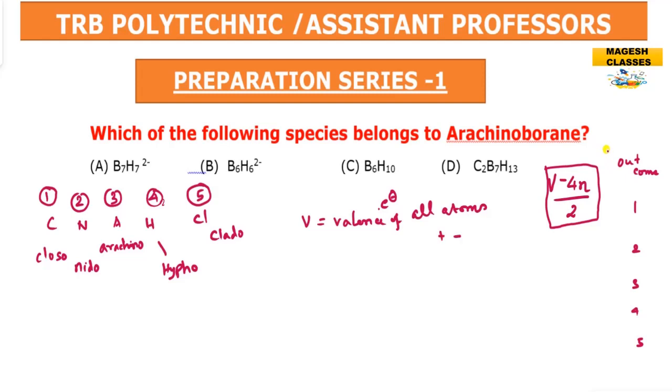If there is a negative charge, we add electrons. So V equals valence electrons of all atoms plus any negative charge. n is the number of vertices, which is the total number of boron or carbon atoms. Now we will check.